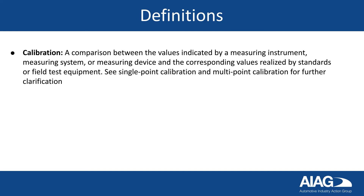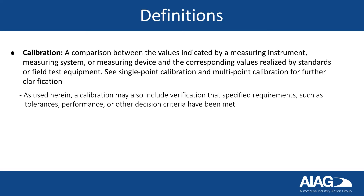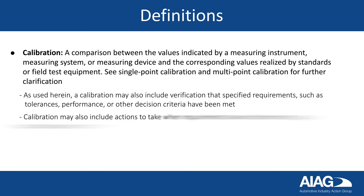A calibration is a comparison between the values indicated by a measuring instrument, measuring system, or measuring device, and the corresponding values realized by standards or field test equipment. A calibration may also include verification that specified requirements, such as tolerances, performance, or other decision criteria, have been met. Calibration may also include actions to take when requirements have not been met, like a calibration adjustment.